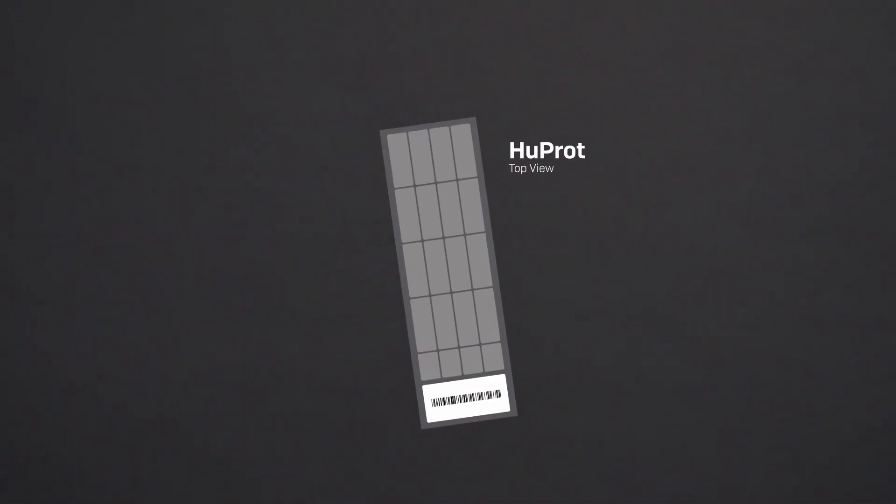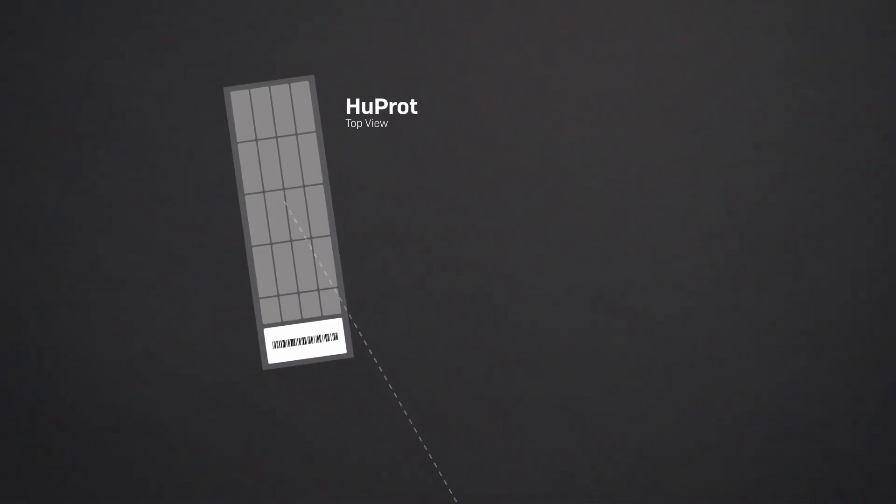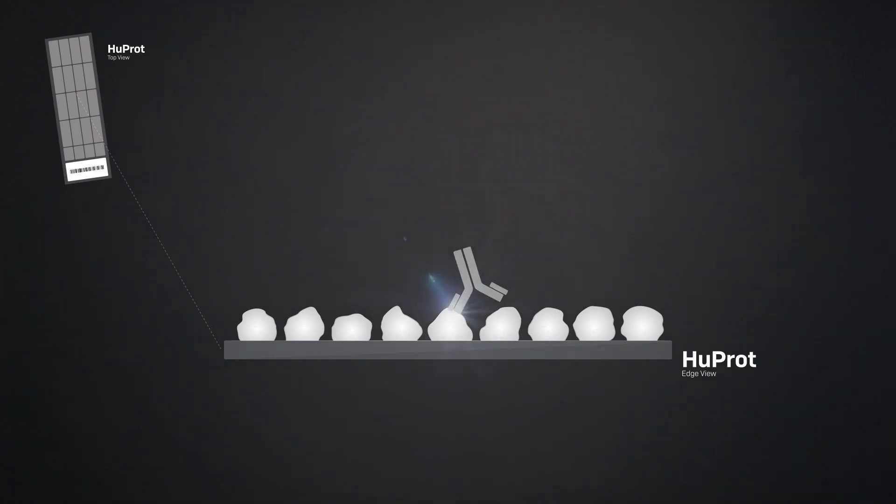This is Huprot. It is the only protein microarray of its kind, which represents the majority of the proteins in the human body. You take blood and you react it with the slide. You next come back with a detection antibody, which can be read on a laser microarray scanner.